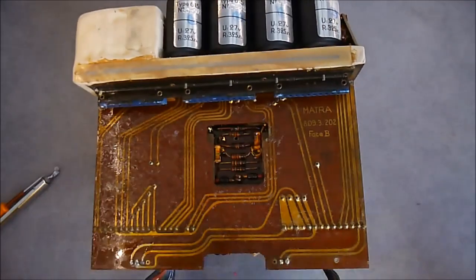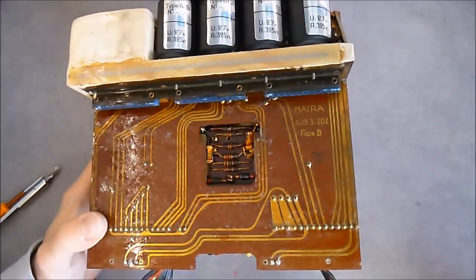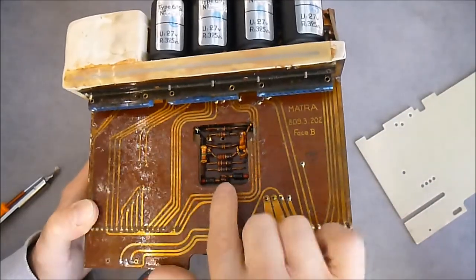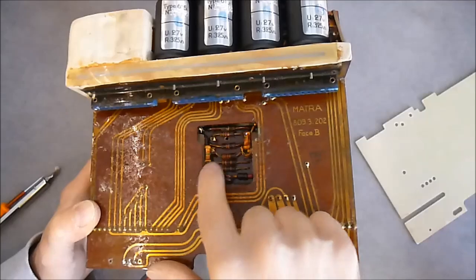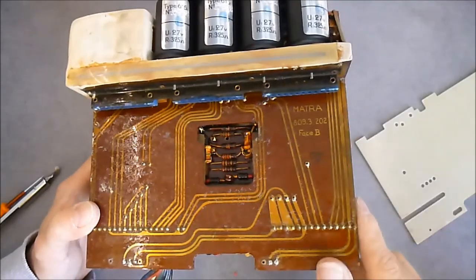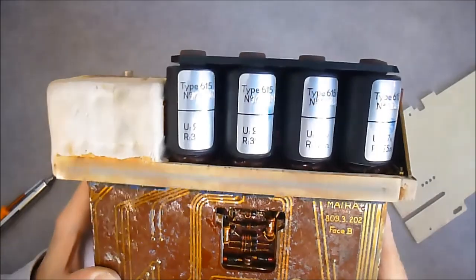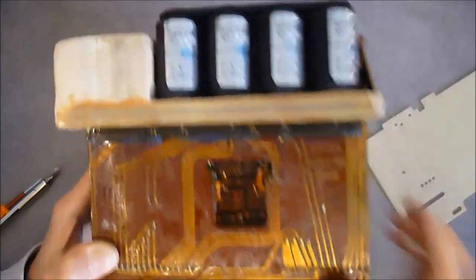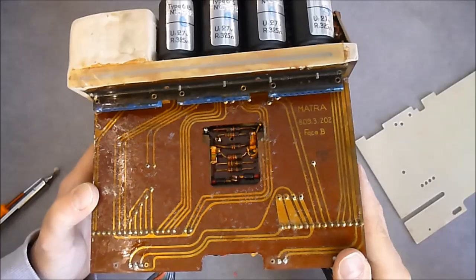So what do we have here? We just have more PCB. More conformal coating. Some small resistors and stuff here. Resistors, capacitors. So it looks like we have glass body diodes. So at least this thing uses diodes.